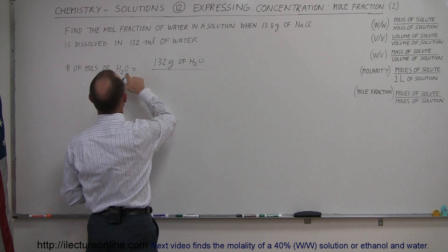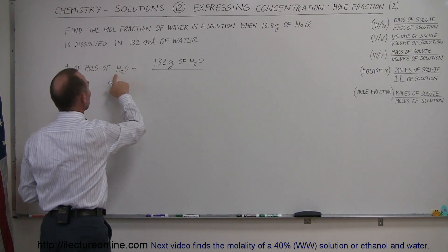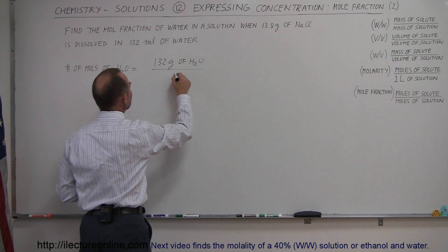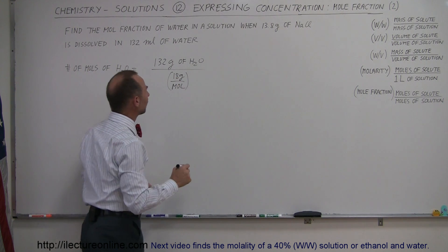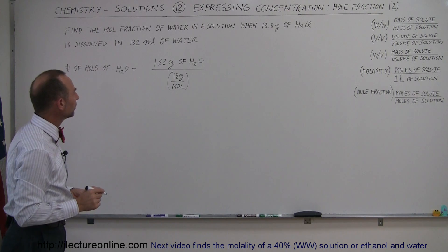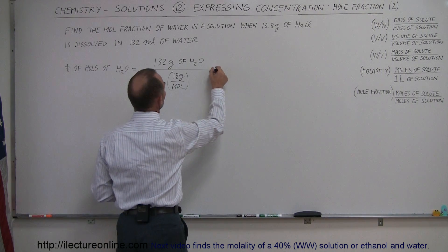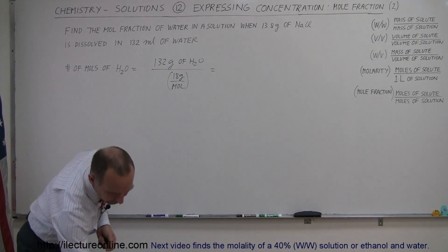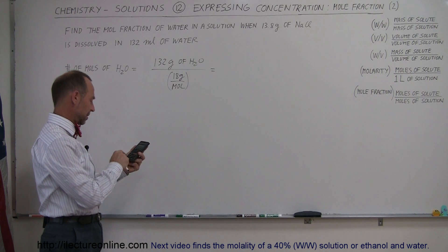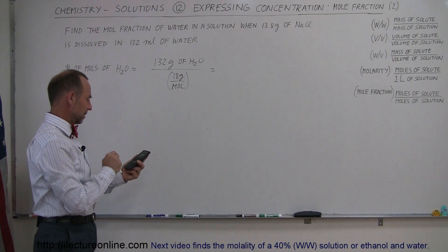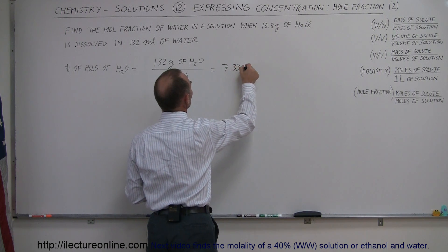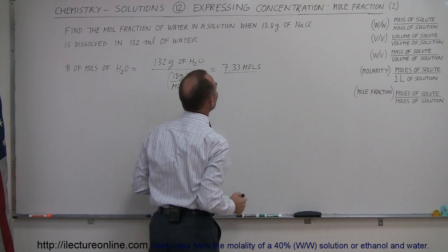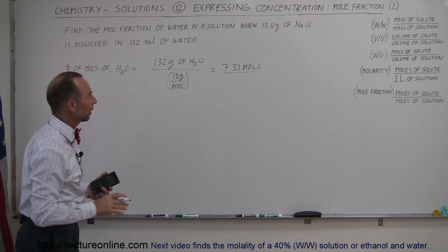The number of grams per mole is... well, water is H2O. So oxygen is 16, hydrogen is 1 times 2, that's a total of 18 grams per mole. That's called the molar mass of the water and so that is equal to... what's 132 divided by 18? It's 7.33, 7.33 moles. So that's the number of moles that we have in the solution.